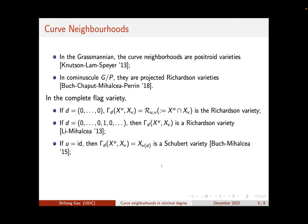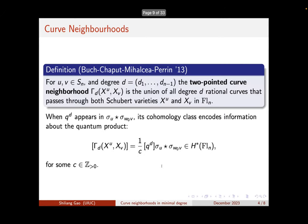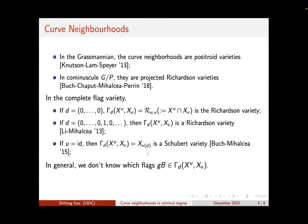If we set U to be the identity, then the curve neighborhood — the union of all curves passing through the Schubert variety X_V — is in fact also a Schubert variety, by work of Buch and Mihalcea. In all these cases, the constant C in the equation is one, so the cohomology class of the curve neighborhood is exactly the Q^D part of the quantum product. But in general, in the complete flag variety case, we don't know which flags lie in the curve neighborhood for an arbitrary D.